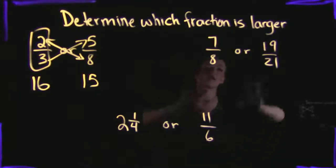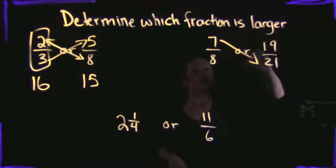Doing that again, so let's look at our next example here. Which fraction is larger, 7 eighths or 19 over 21? So again, we need to make an X with our multiplication, starting out with 7 times 21, which is 141.